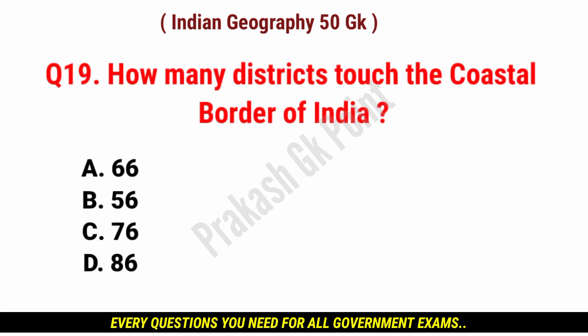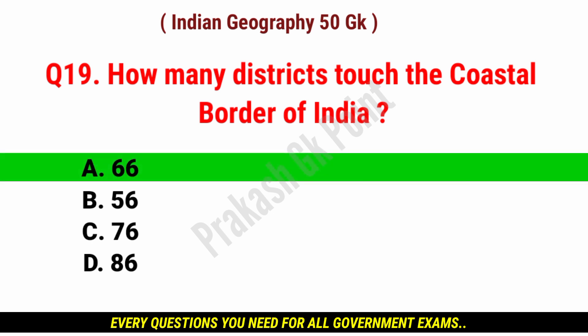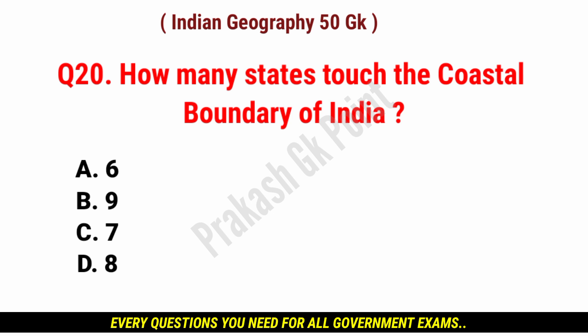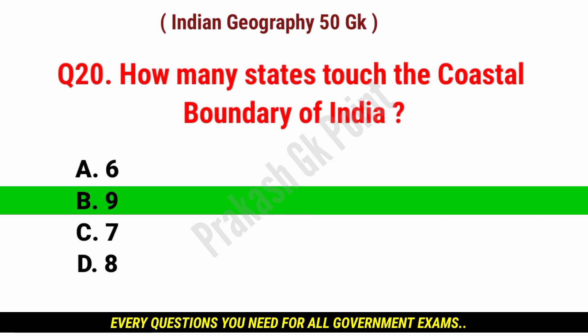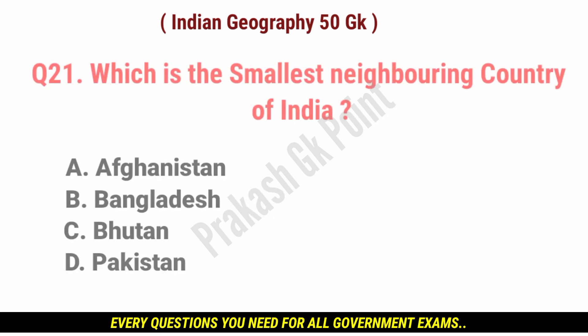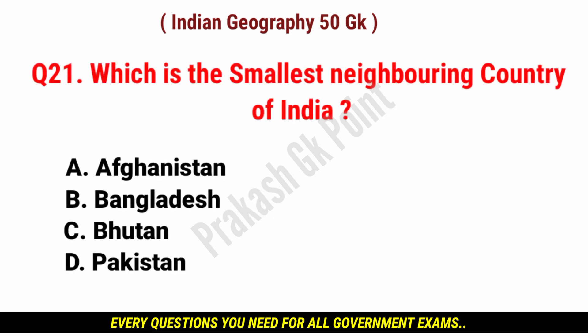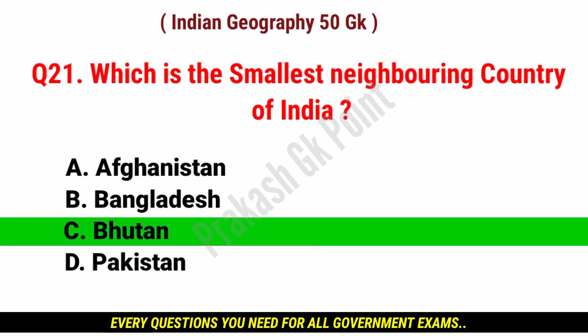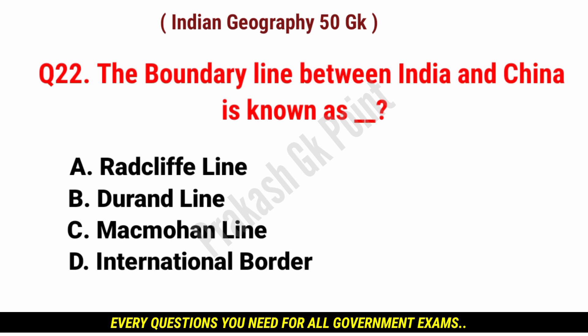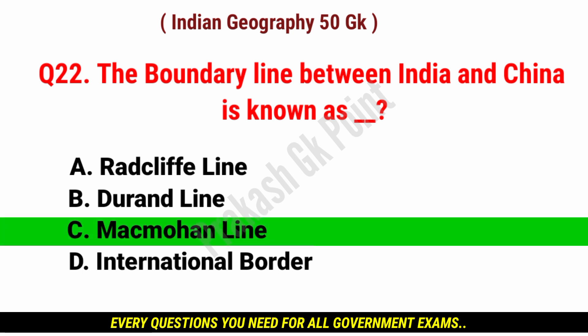How many districts touch the coastal border of India? Answer: option A, 66 districts. How many states touch the coastal boundary of India? Answer: option B, 9 states. Which is the smallest neighboring country of India? Answer: option C, Bhutan. The boundary line between India and China is known as? Answer: option C, McMahon Line.